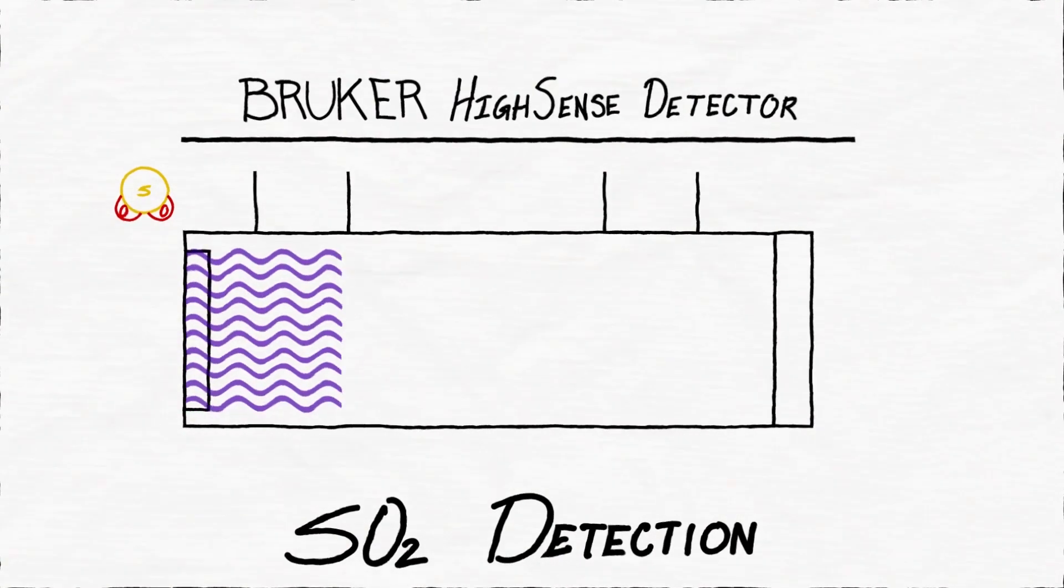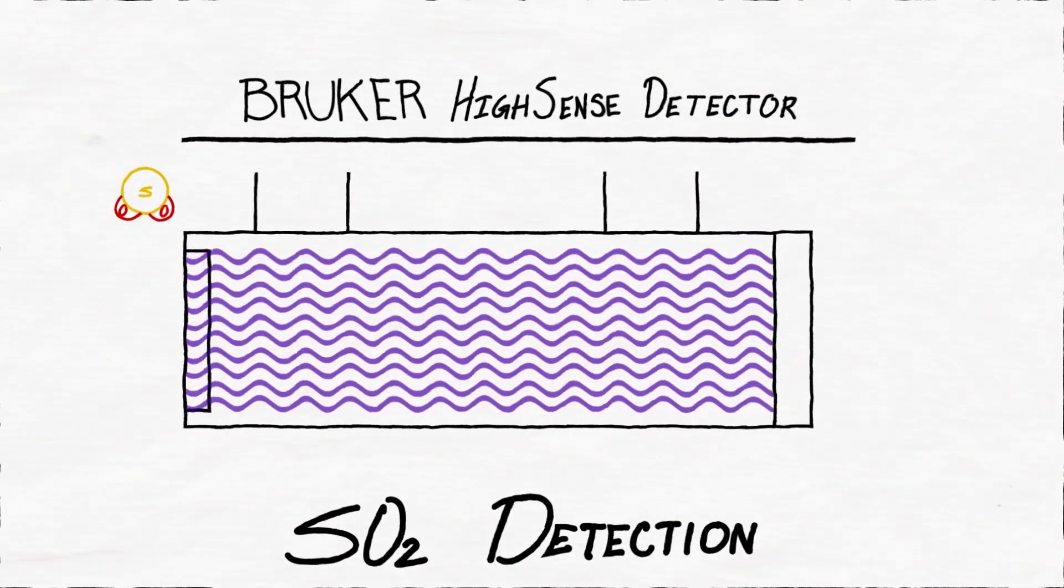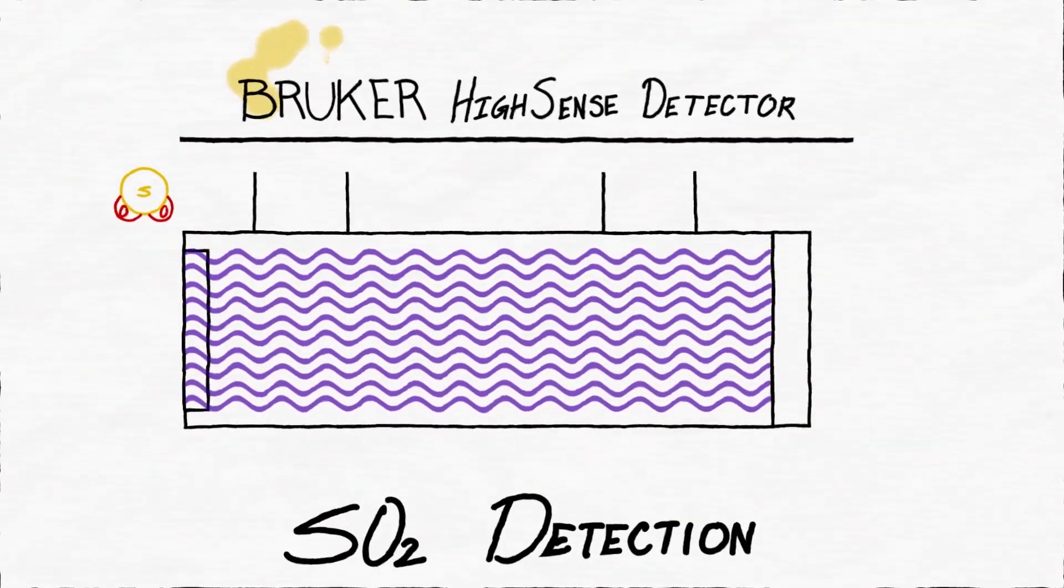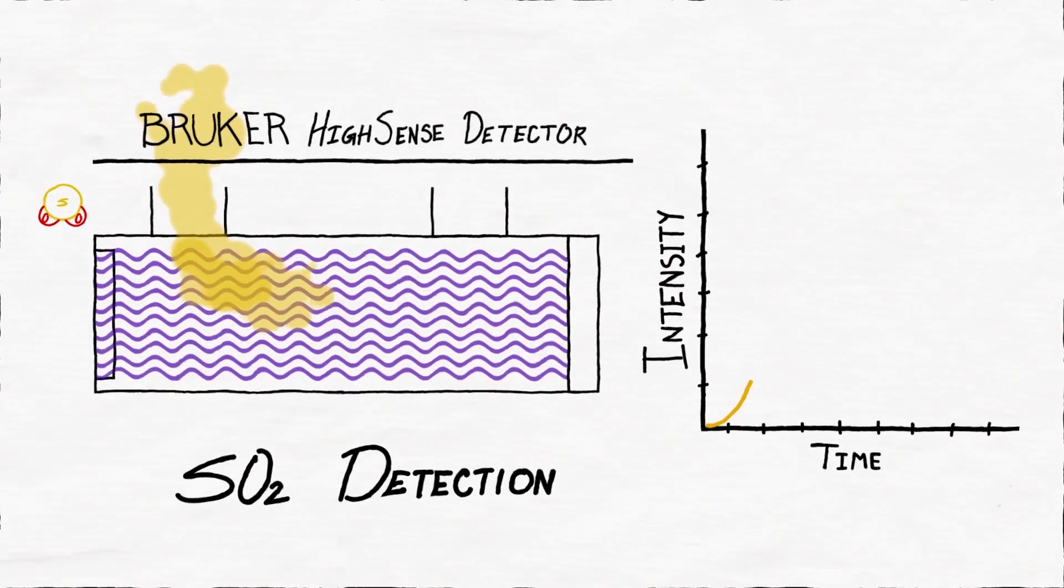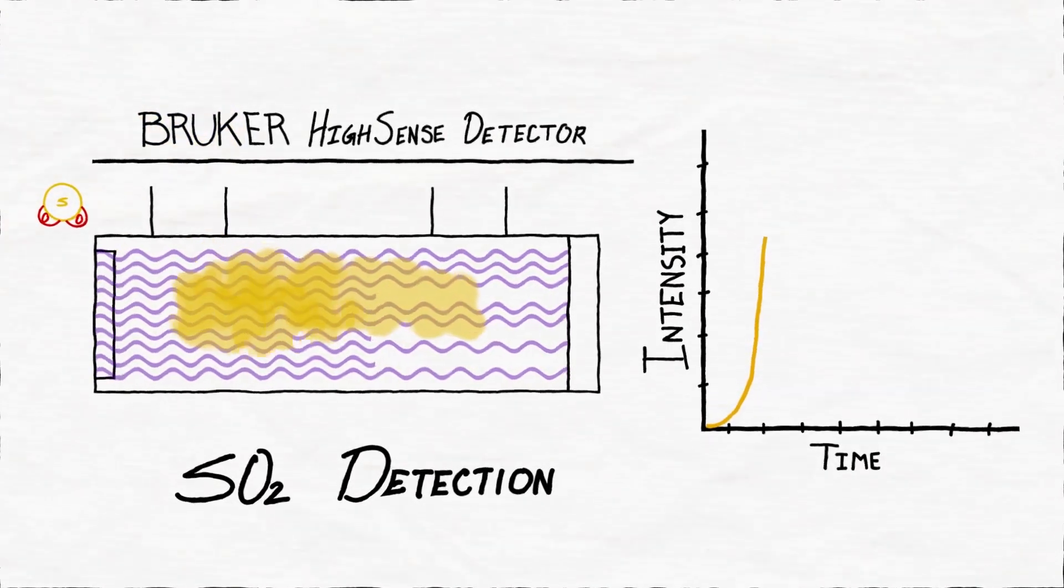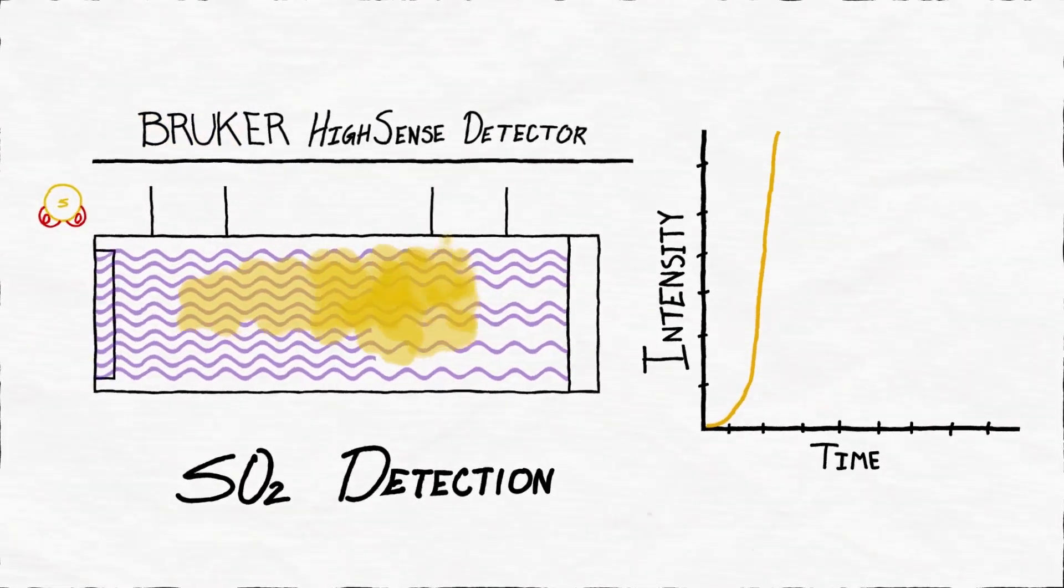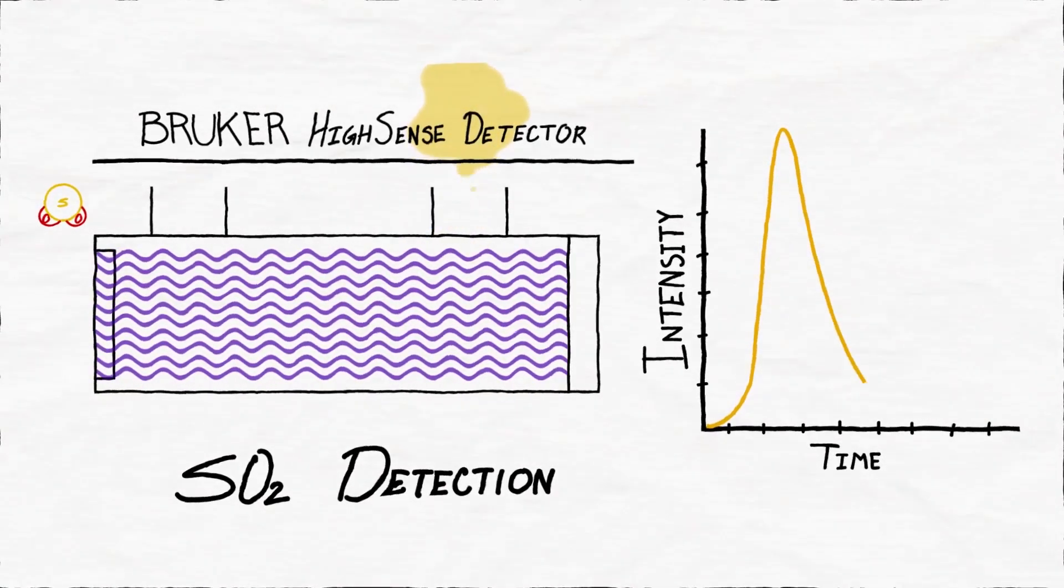The most effective way to detect sulfur dioxide is through UV absorption. The SO2 absorbs a portion of the ultraviolet light, resulting in a measurable drop in UV. This detection technique is much more efficient and faster than traditional IR absorption.